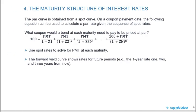The par curve is obtained from a spot curve. On a coupon payment date, the following equation can be used to calculate a par rate given the sequence of spot rates: what coupon would a bond at each maturity need to pay to be priced at par? So: 100 equals payment divided by (1 + Z1), plus payment divided by (1 + Z2) squared, plus payment divided by (1 + Z3) cubed. We use the spot rates to solve for the payment at each maturity. The forward yield curve shows the rates for future periods — for example, the 1-year rate 2 years and 3 years from now.